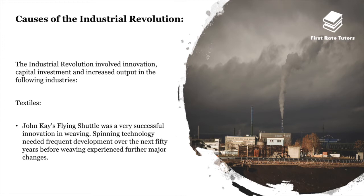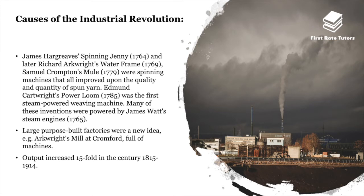One of the industries that really benefited was textiles. John Kay's flying shuttle was very successful in innovating weaving. James Hargreaves's spinning jenny in 1764, Richard Arkwright's water frame in 1769, and Samuel Crompton's mule in 1779 were spinning machines that all improved the quality and quantity of spun yarn. Edmund Cartwright's power loom in 1785 was the first steam-powered weaving machine, and many of these inventions were powered by James Watt's steam engines of 1765.